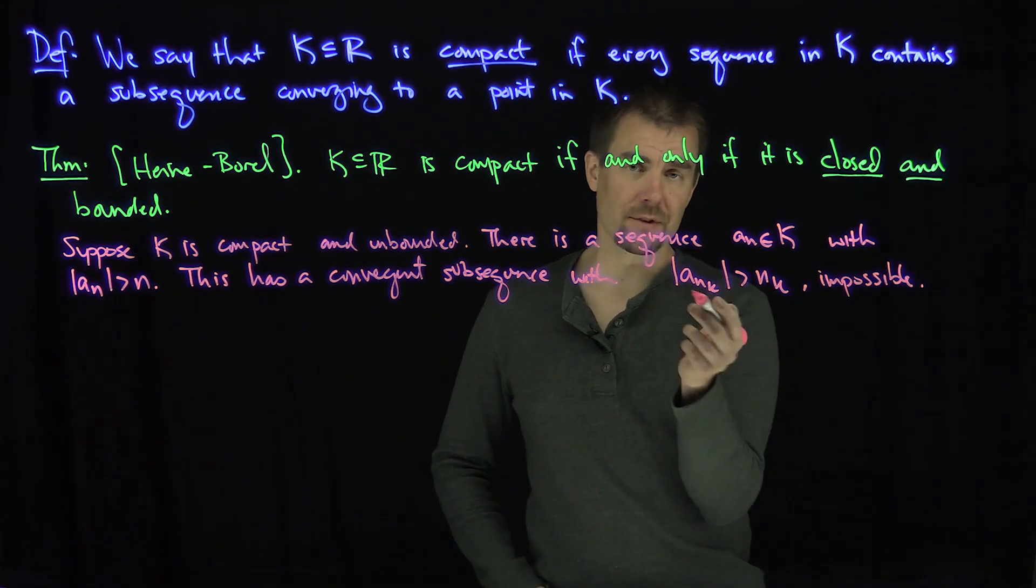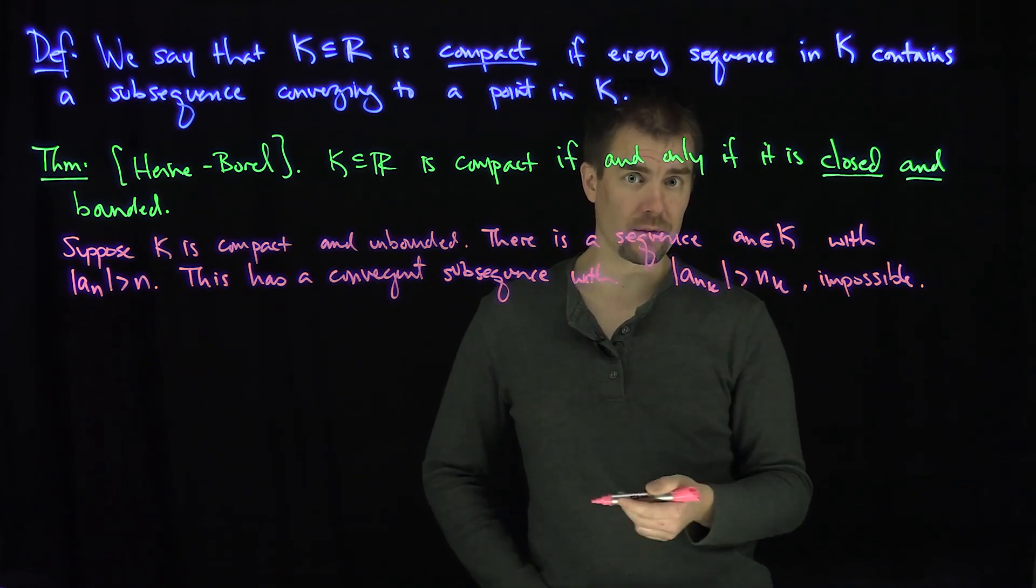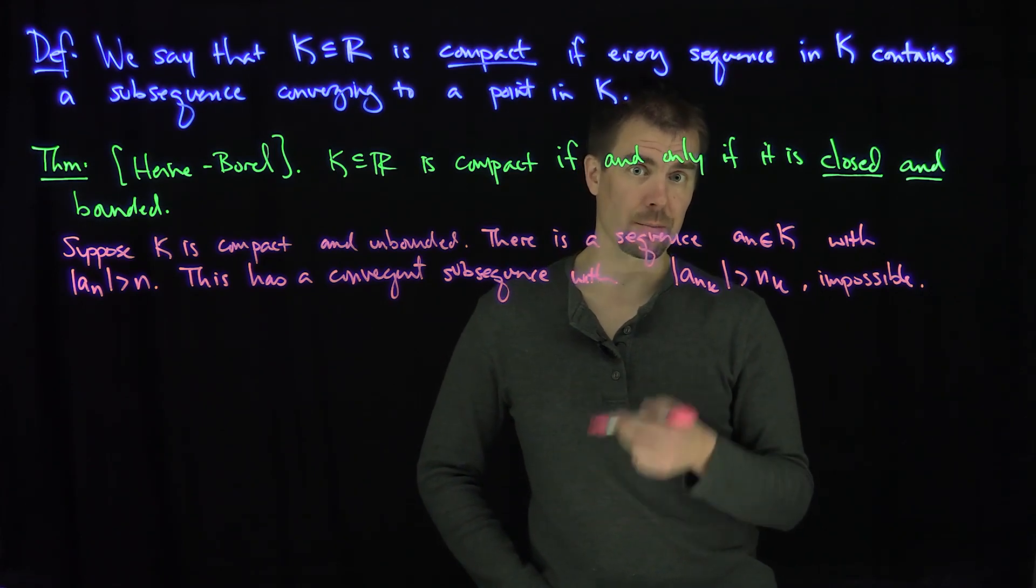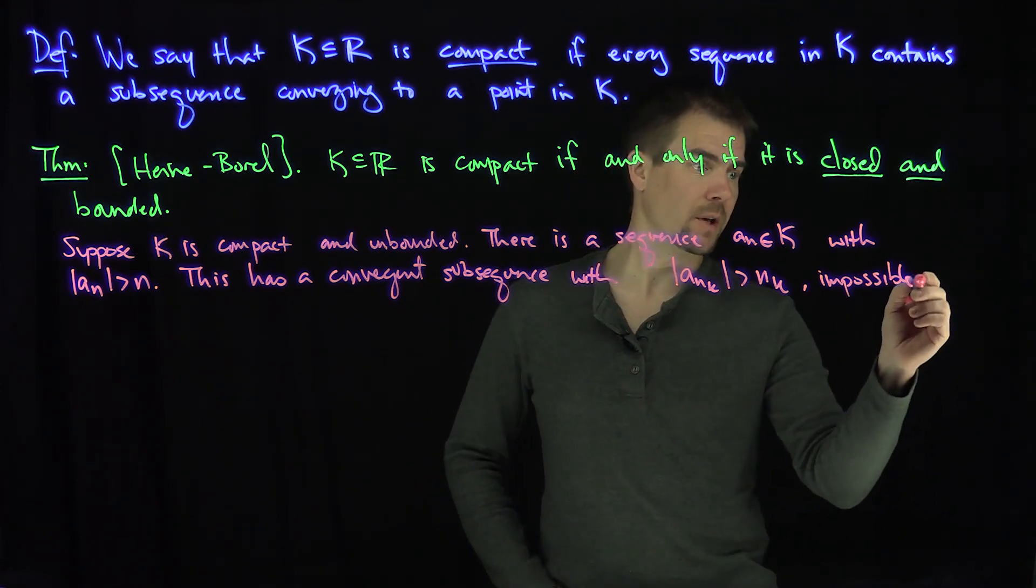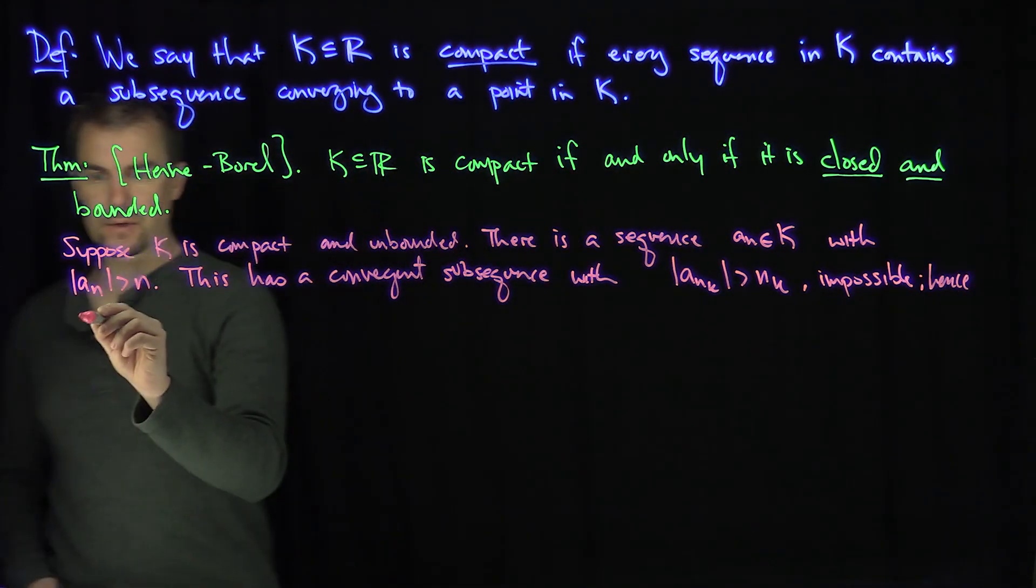Because if the subsequence converges, that convergent subsequence has to be bounded. We've proven in previous videos that a sequence converges implies that the sequence is bounded. Hence k is bounded.